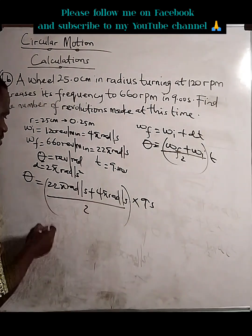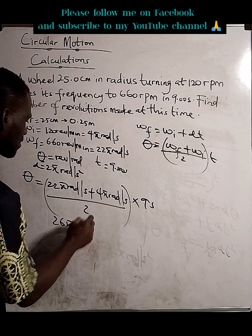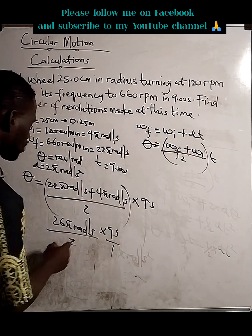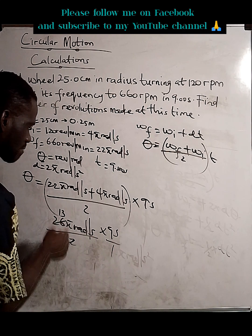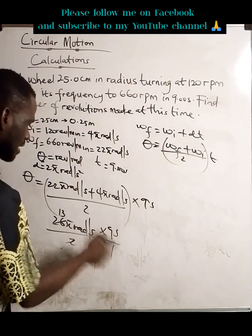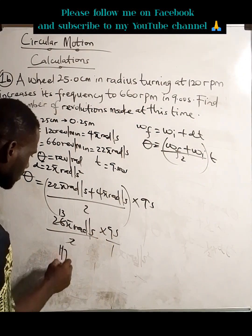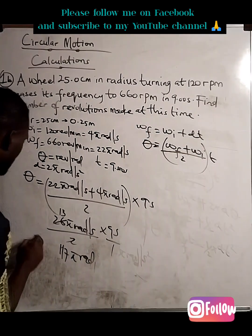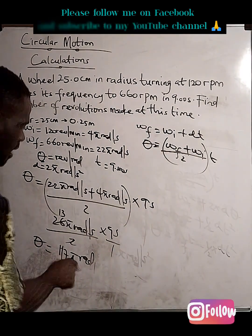So, when we add this together, that will give us 26 pi rad per second divided by 2 times 9 seconds. So, 2 into 26 is 13. 13 pi rad per second times 9. That will give us 117 pi rad. That's it.